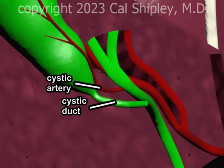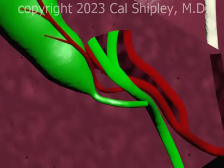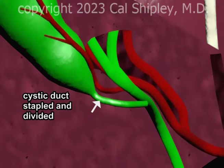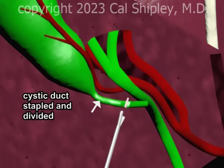It is these two structures — the cystic artery and the cystic duct — that must be cut in order to remove the gallbladder. To prevent leakage of bile into the abdominal cavity, the cystic duct is first stapled and then divided using a cutting tool.